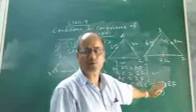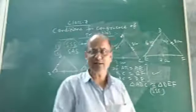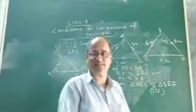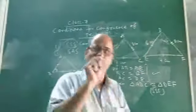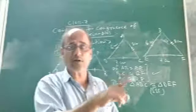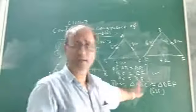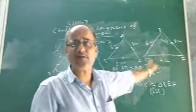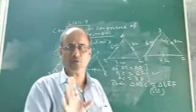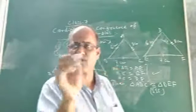So from this discussion, we came to know that if three pairs of corresponding sides of two triangles are equal, then the two triangles are congruent. It is not necessary to show the equality of corresponding angles. If only three pairs of corresponding sides are equal, then we can say that the two triangles are congruent. This is your side-side-side congruence condition.